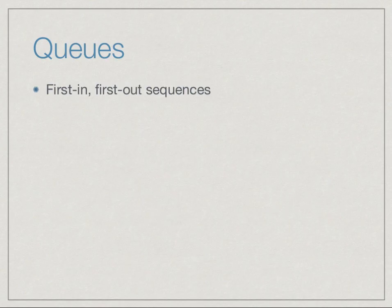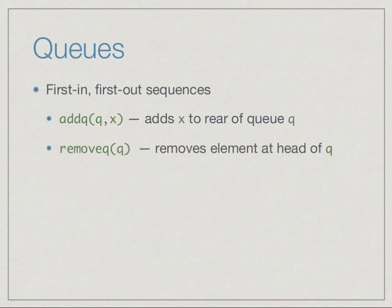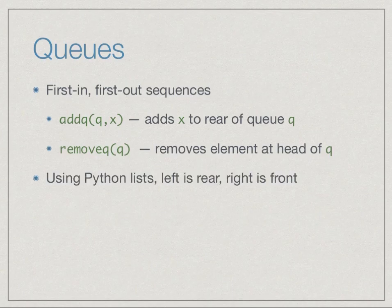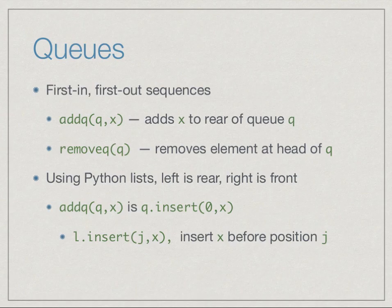Another disciplined way of using a list is a queue. Unlike a stack which is last-in first-out, a queue is first-in first-out. We add at one end and remove at the other — exactly like a real-life queue where you join at the back and get served at the head. add_queue(q, x) adds x to the rear of the queue, and remove_queue removes the element at the head. We can use Python lists and the built-in insert function for this.